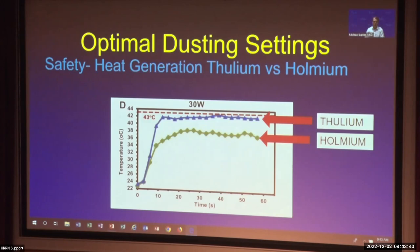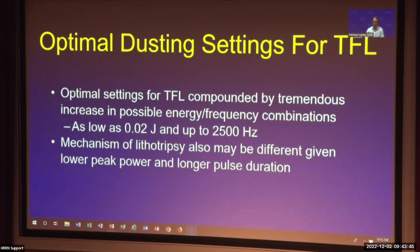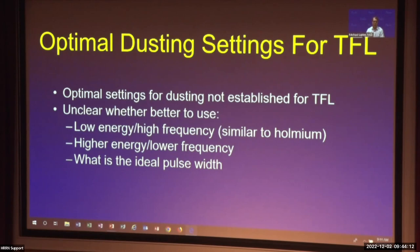Optimal settings for thulium are further complicated by the tremendous increase in possible energy-frequency combinations. For most holmium lasers, settings range from about 0.2 joules to up to 150 hertz. For thulium, you have down to 0.02 joules and up to 2,500 hertz. The mechanism of lithotripsy may also be different given lower peak power compared to holmium and longer pulse duration. So the optimal settings for thulium are not established — it's not clear whether to use low energy and high frequency or high energy and low frequency, or what the ideal pulse width would be.